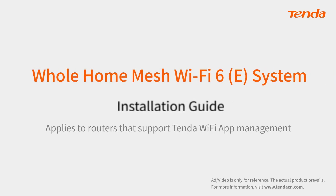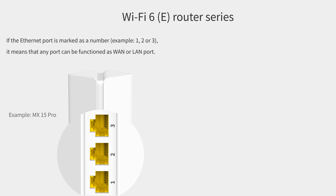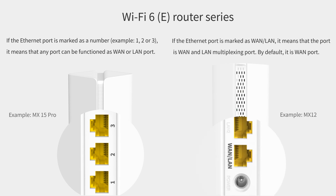This is a whole home mesh WiFi 6E system installation guide, which applies to routers that support the Tenda WiFi app management. If the ethernet port is marked as a number (e.g., 1, 2, or 3), any port can function as a WAN port. If the ethernet port is marked as 1/LAN, it means the port is a WAN/LAN multiplexing port — by default it is a WAN port.